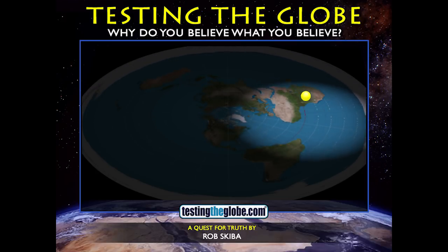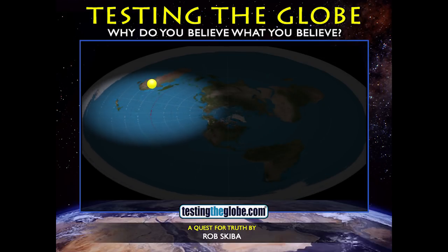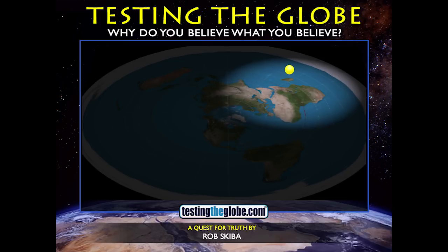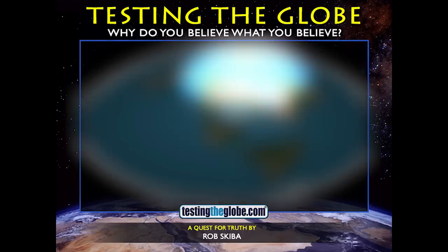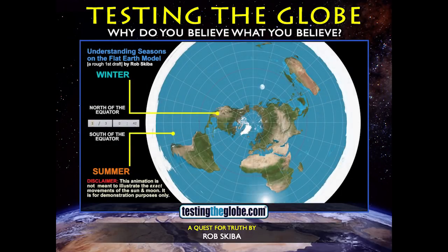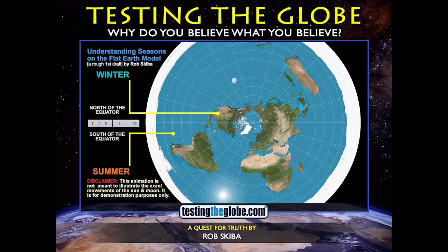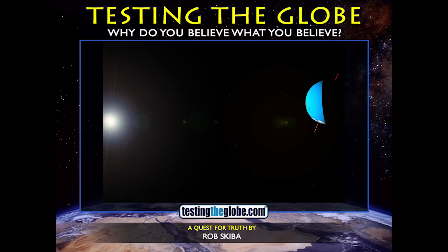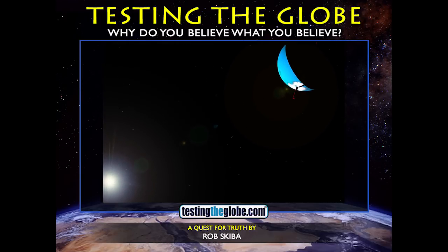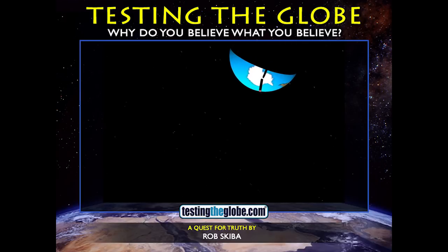Number nine: time zones don't prove a globe — time zones can work just as well on a disk. While looking into how the sun and time zones work, I naturally started to wonder how the seasons work. This came as a result of another video I was working on, trying to figure out how the 24-hour sun allegedly works in Antarctica. First I wanted to see how it would work on a globe, so I created this animation with the earth at a 23.4 degree tilt.